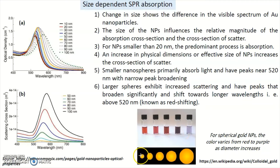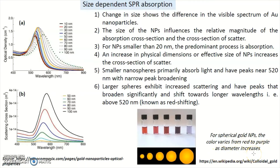If you take gold nanoparticles and change their size, you can see a change in color. For example, if you take very small gold nanoparticles, they show red color. But as you increase the size of the gold nanoparticle, it becomes violet or purple or blue in color. For spherical gold nanoparticles, the color varies from red to purple as diameter increases.